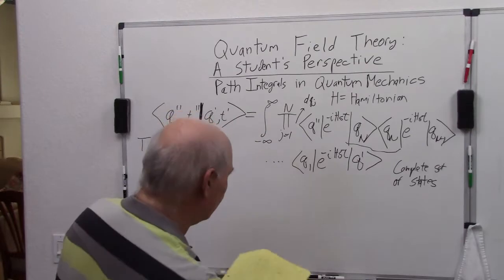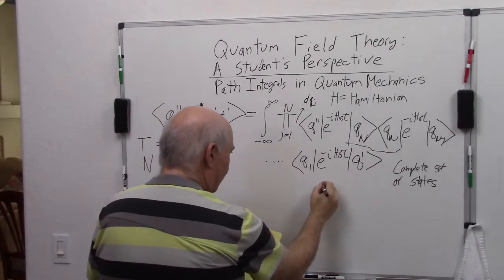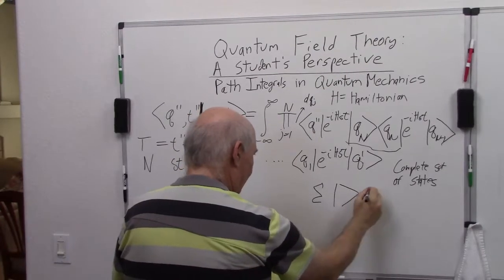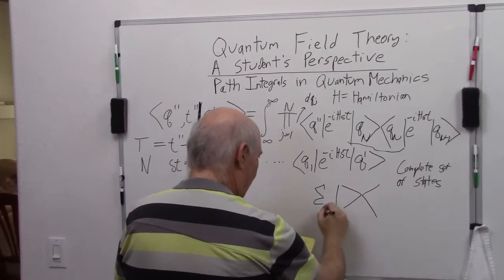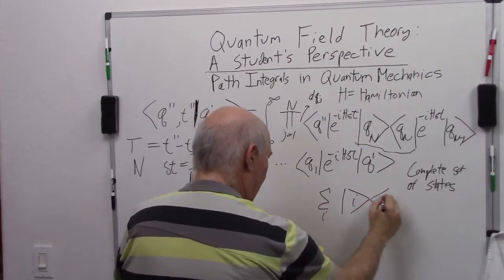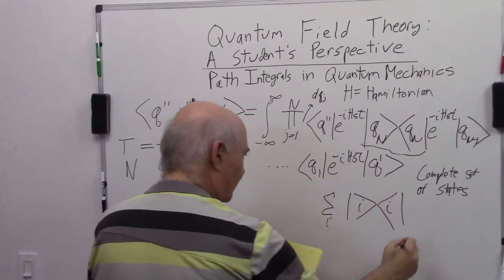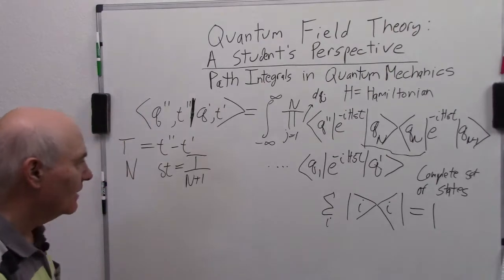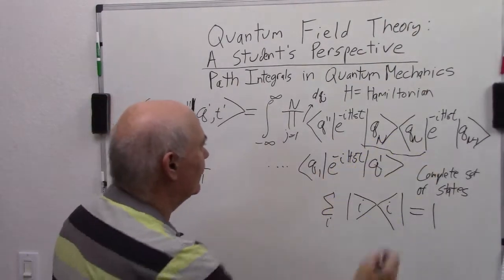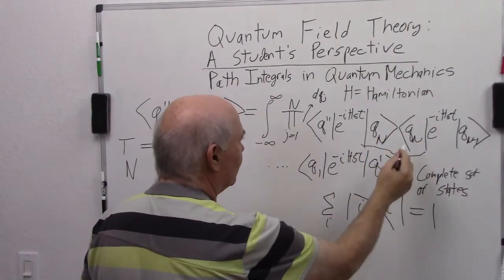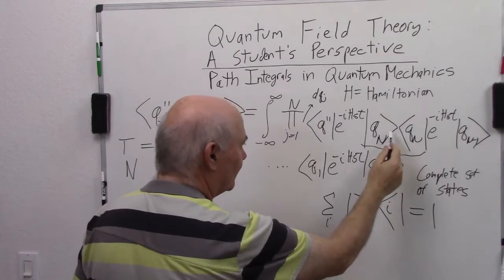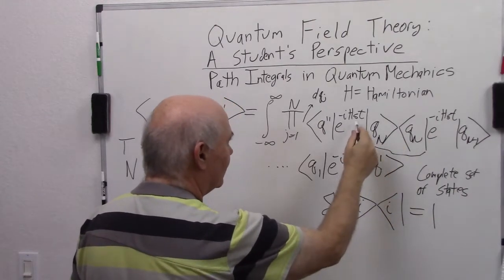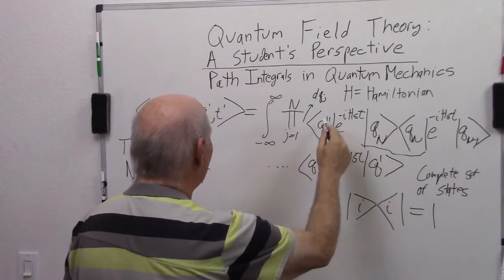You remember probably the fundamental identity of quantum mechanics with the Dirac notation is the sum over i, where i is a complete set of basis states, is equal to 1. So that's what we're doing here. We just put in a bunch of 1s everywhere, and so we end up getting q prime e to the minus i h delta t q double prime.